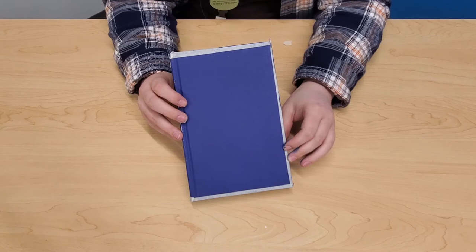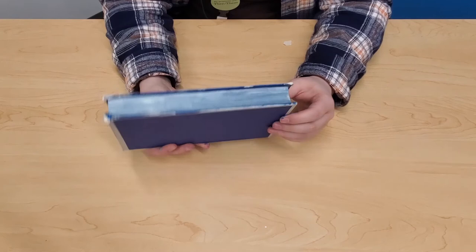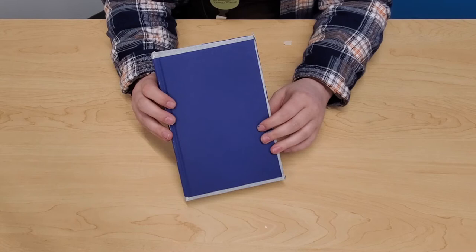So acrylics as Troy explained are basically plastic so although we have made our book very pretty we've also stuck the pages together. So the last thing that we have to do for this craft is unstick those pages.